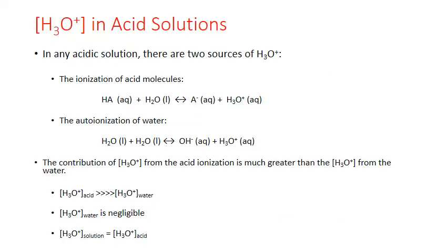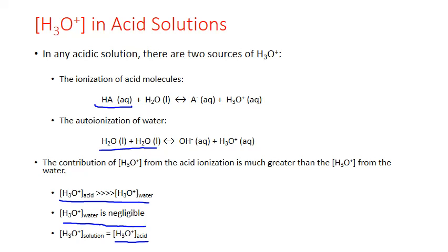In any acidic solution, there are actually two sources of hydronium ion: the ionization of the acid molecules in the water — we'll use HA as a general formula for acid — and the autoionization of the water itself, the solvent. For most acids, the contribution of the hydronium ion from the acid is much greater than that from water. We can make our calculations of pH much simpler if we just assume that the hydronium ion contribution from the autoionization of water is negligible. This is a valid assumption for almost all cases, with the only exception being when the acid concentration is really very dilute.